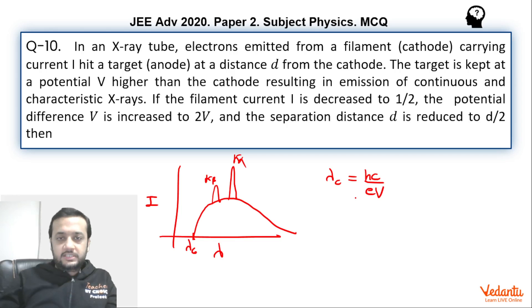If you see the changes that are happening over here, we are doubling the potential difference and reducing the filament current to half. That means if you think in terms of power, power of all the electron beam that is coming is still constant, I/2 into 2V. That means power of the electron beam, all the electrons that are coming, that is still constant.